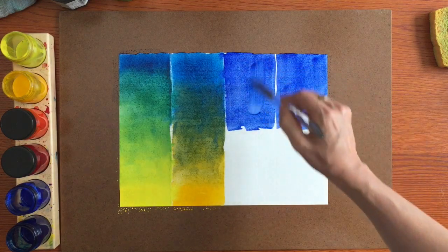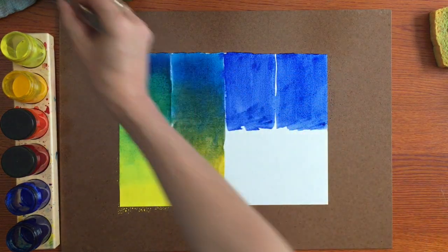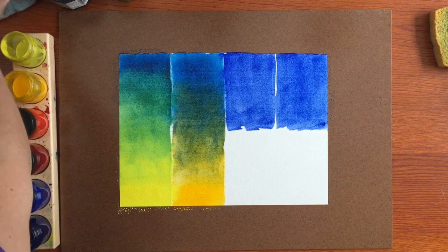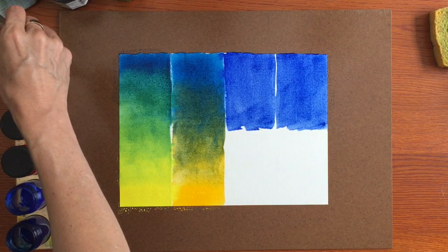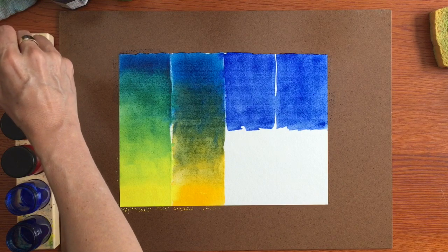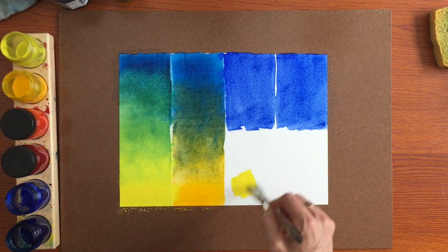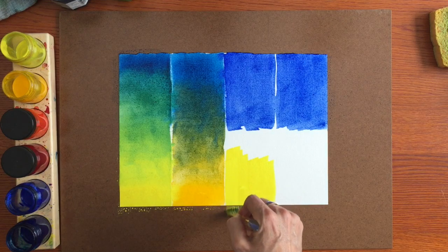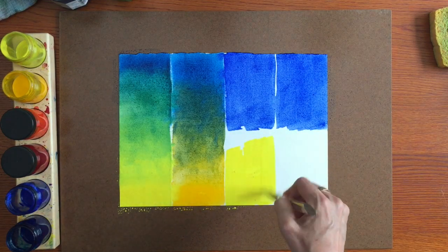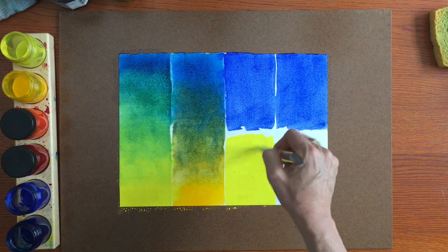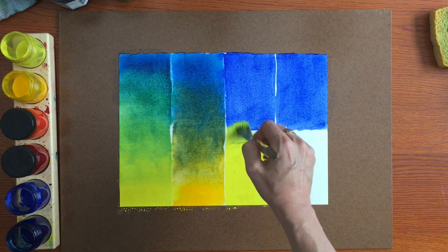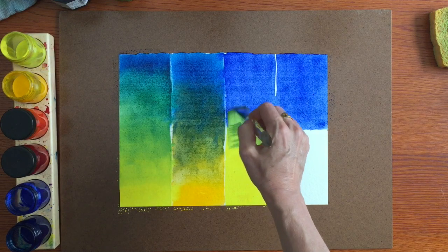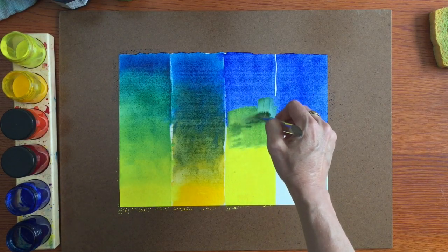And add enough color there so that you have plenty to mix with. Rinse your brush well, and on comes the lemon yellow. Now here the color is bright because the lemon yellow brings the brightness.